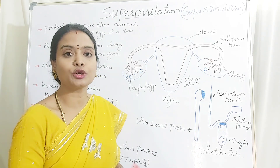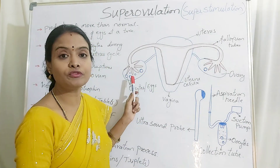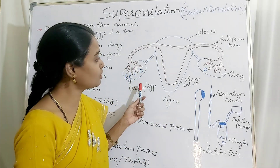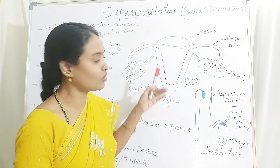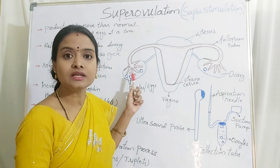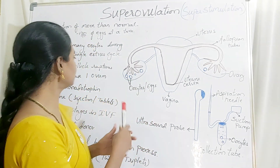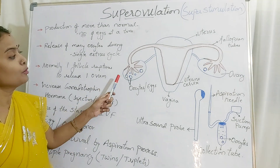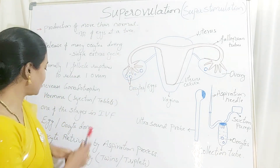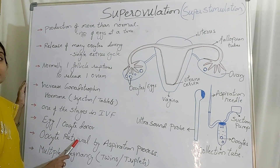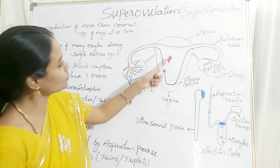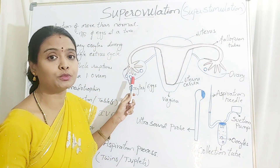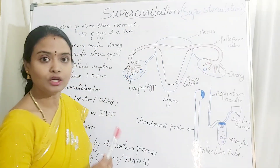You cannot increase the reproduction rate, but you can increase the ovulation rate so that at a time you can extract more than three eggs. Instead of one attempt yielding only one offspring, the cow can produce three calves at a time. In the IVF stage, super ovulation is given so that more number of oocytes are produced. You can see this is before hormonal treatment and this is after hormonal treatment, where more oocytes are produced by the animal.